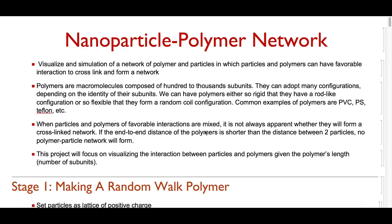When particles and polymers of favorable interaction are mixed, it is not always apparent whether they will form a cross-linked network. If the polymer configuration makes the end-to-end distance of the polymer shorter than the distance between two particles, no polymer-particle network will form. This project will focus on visualizing the interaction between particles and polymers given the polymer's length or number of subunits.